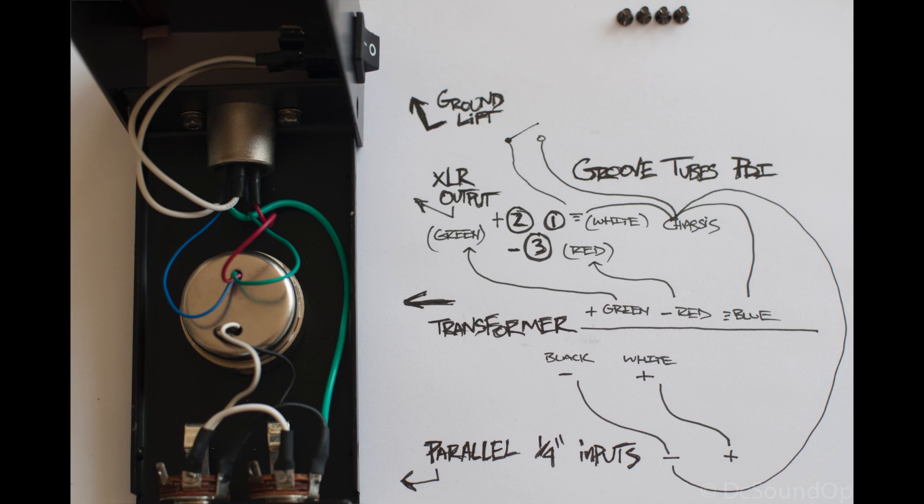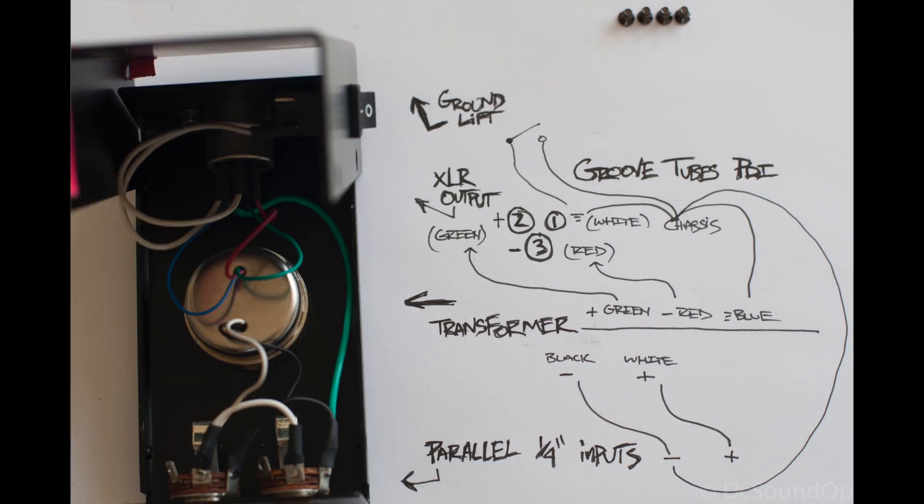There's the XLR output and then the ground lift switch. You can see me drawing in the wiring diagram here for how that works and basically the ground's tied all the way across. And then you can see it popping up to the switch there so you can lift the switch.